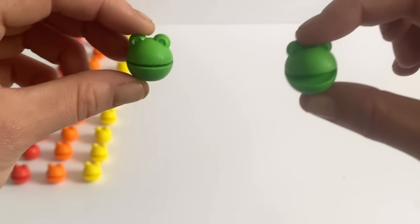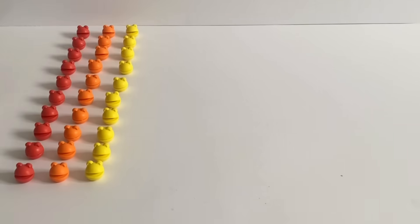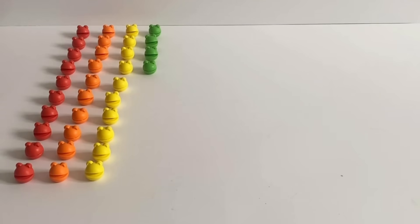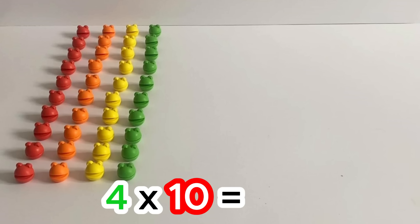Next are our Green Number Blobs to represent Number Block 4. 1, 2, 3, 4, 5, 6, 7, 8, 9 and 10. Ten Green Number Blobs. 4 times 10 equals 40.